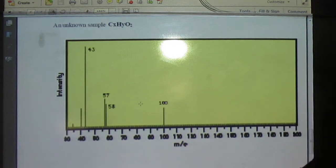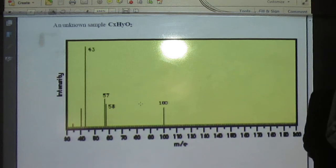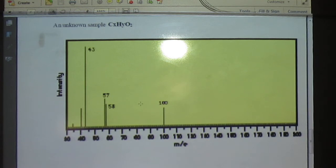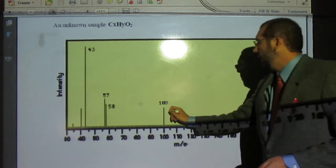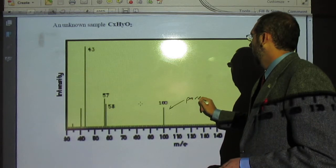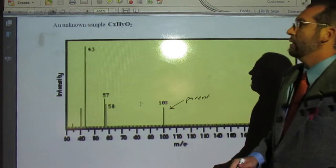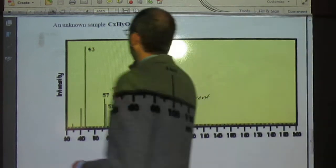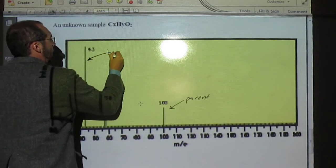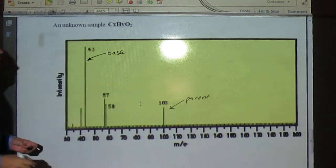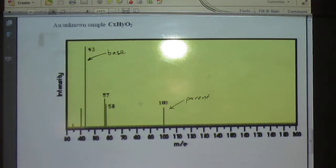The first thing that we want to do is identify the two major peaks. Which one is the parent ion real quick? The 100, of course. And the base peak? 43. So, the base peak is so tall because the fragment that it's identifying is the most stable fragment.